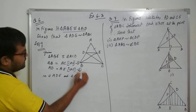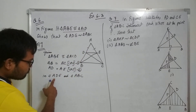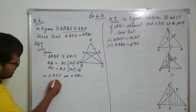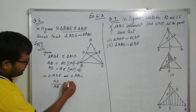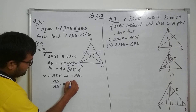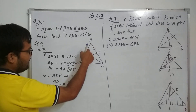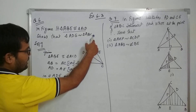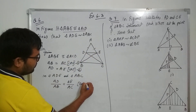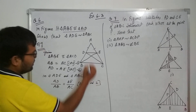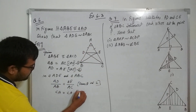Now in triangle ADE and triangle ABC — because we need to prove this — if you see: AD/AB equals AE/AC. This is from equations one and two. Also, we have a common angle: angle A equals angle A.